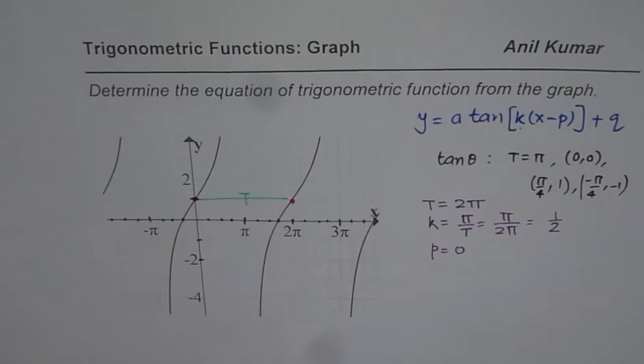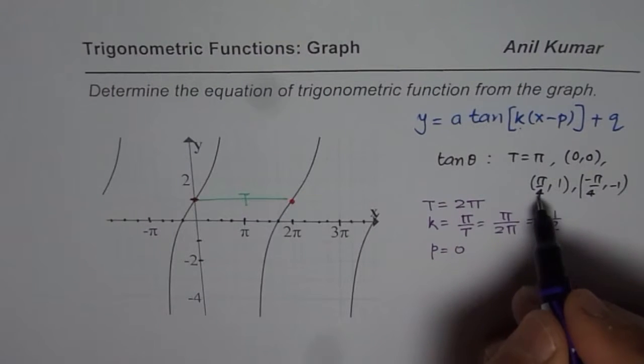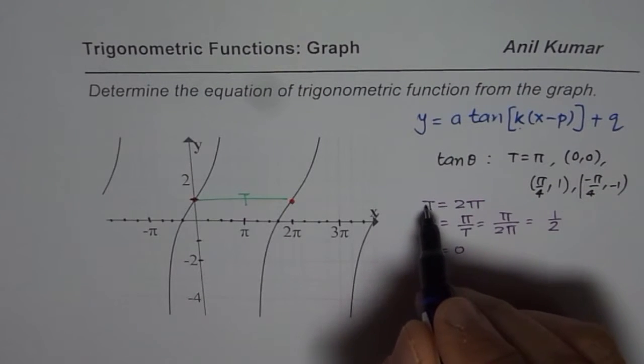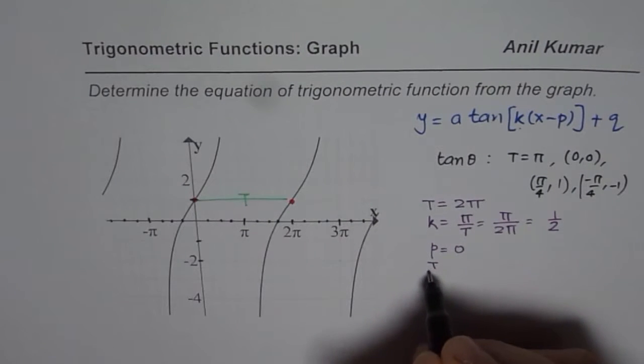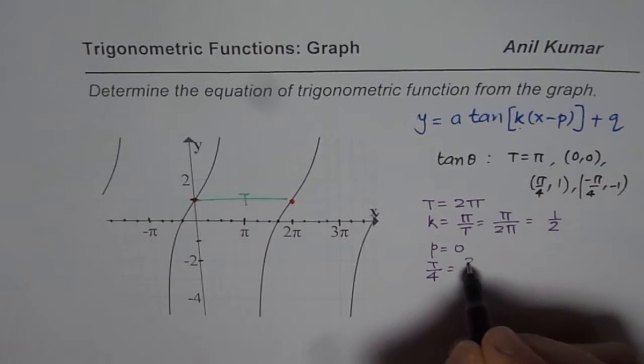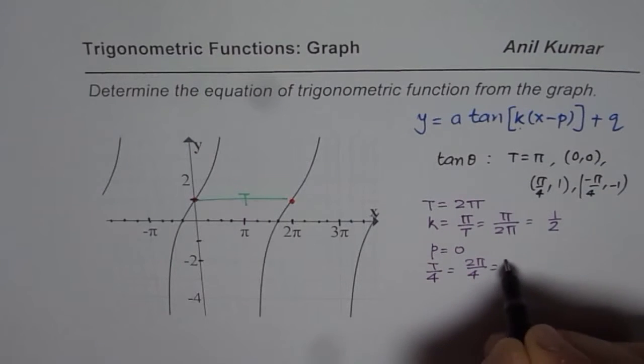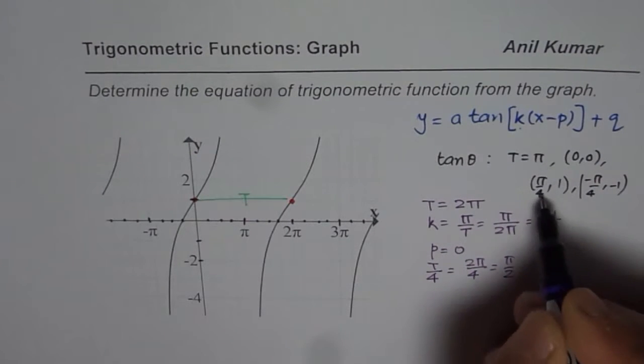Now the second point is t by 4. Now, t, time period, is 2 pi. What is t by 4 for us? That is to say, 2 pi by 4. If I do 2 pi by 4, I get pi by 2. So these values for me, where the function should happen, 1, is pi by 2.